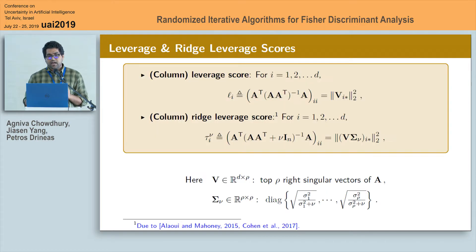Next, we define the ith column leverage score of A which is the squared L2 norm of the ith row of the matrix V times sigma nu. Here V is the matrix of top rho right singular vectors of A and sigma nu is a rho by rho diagonal matrix as defined on the slide.